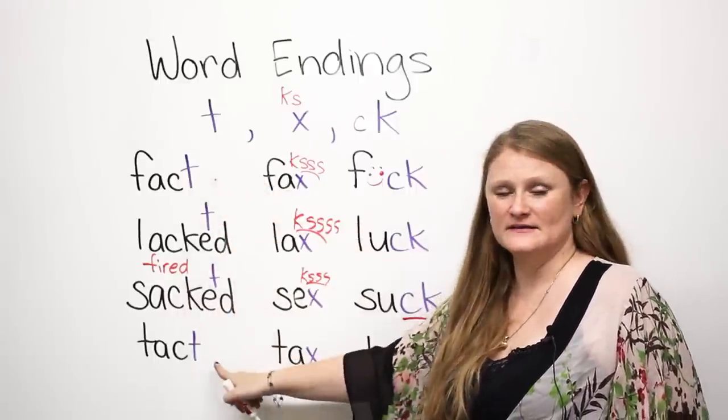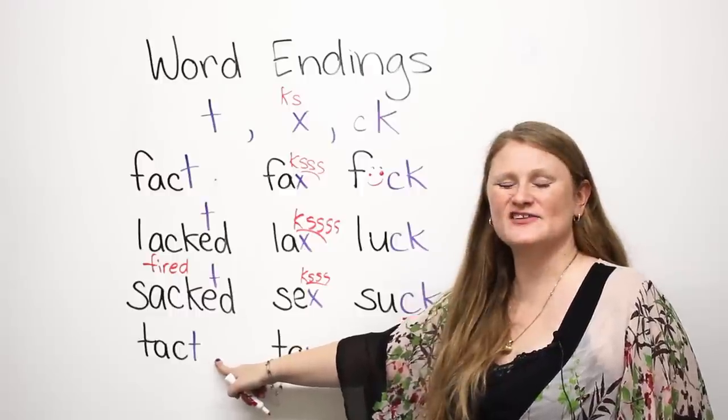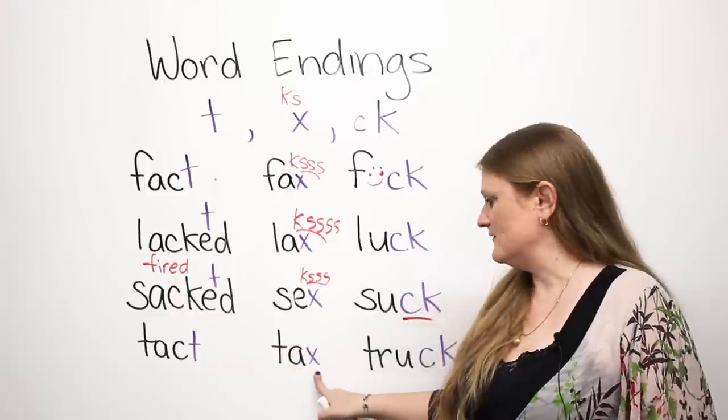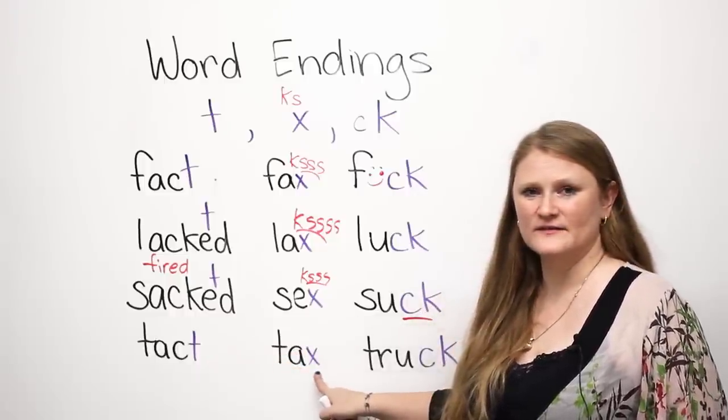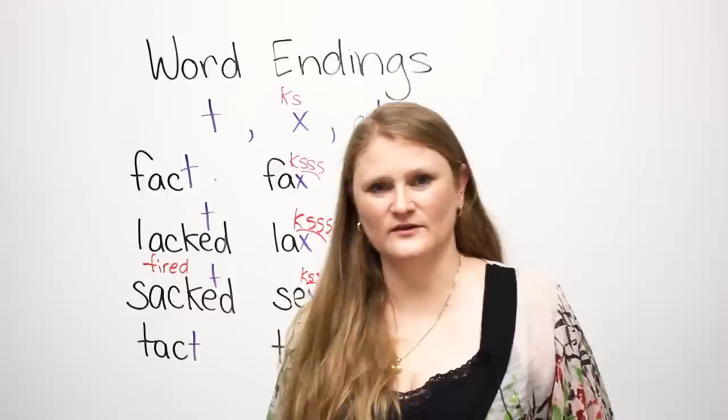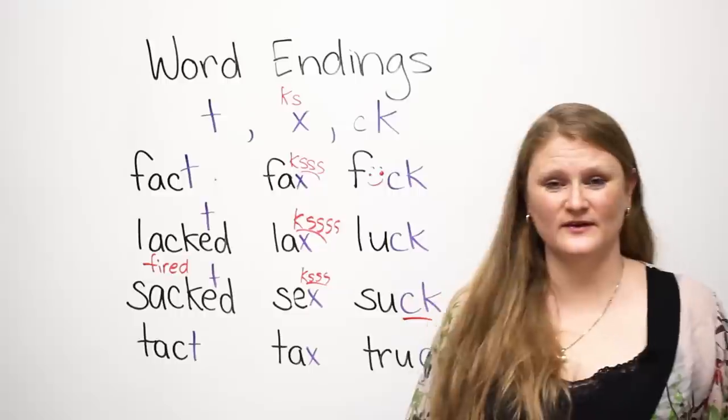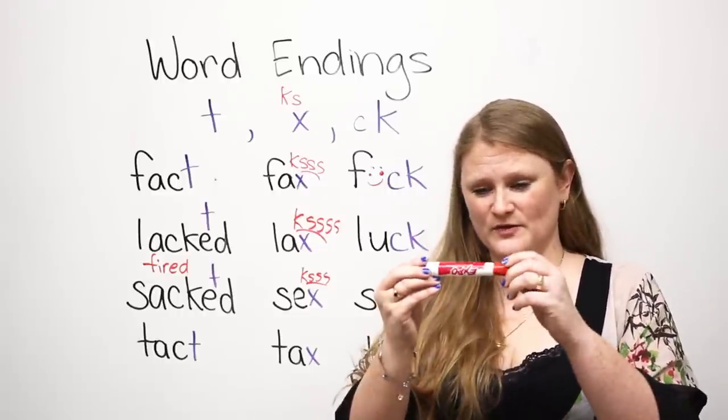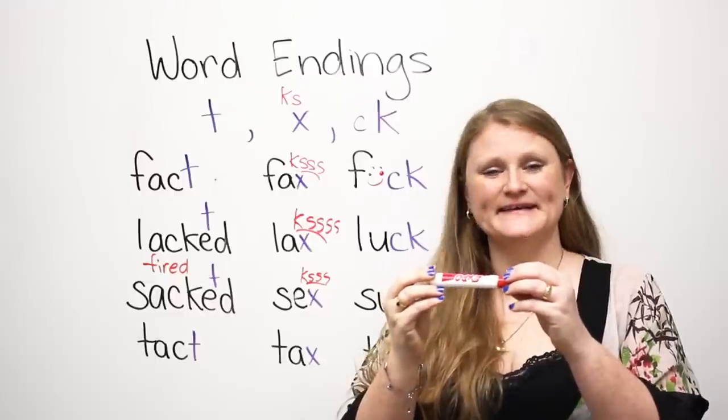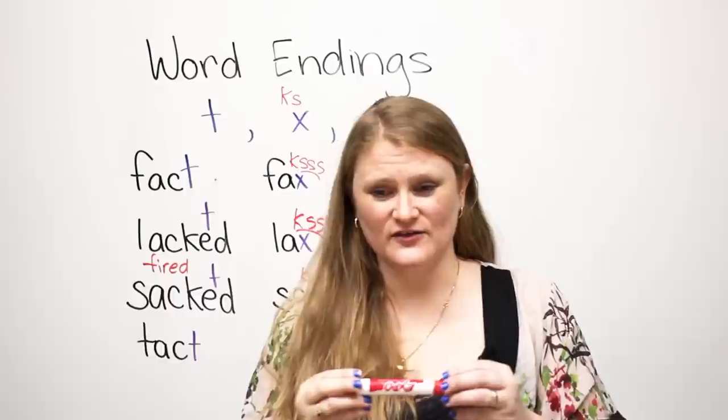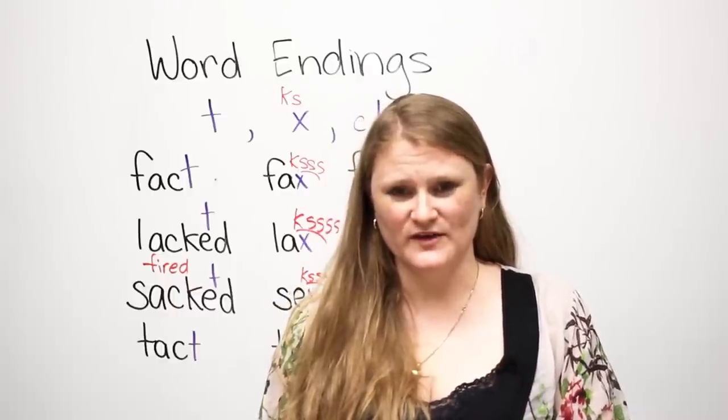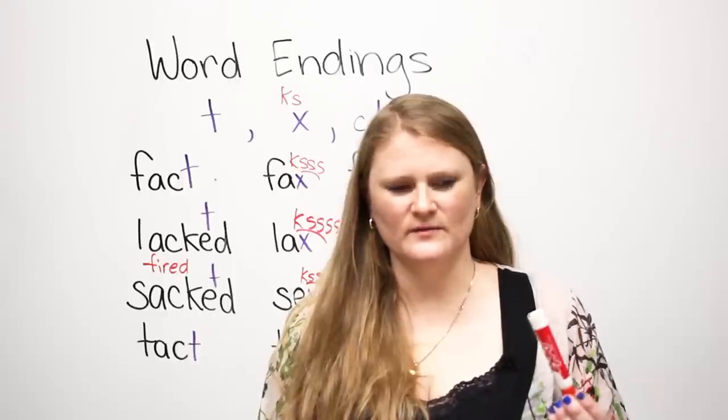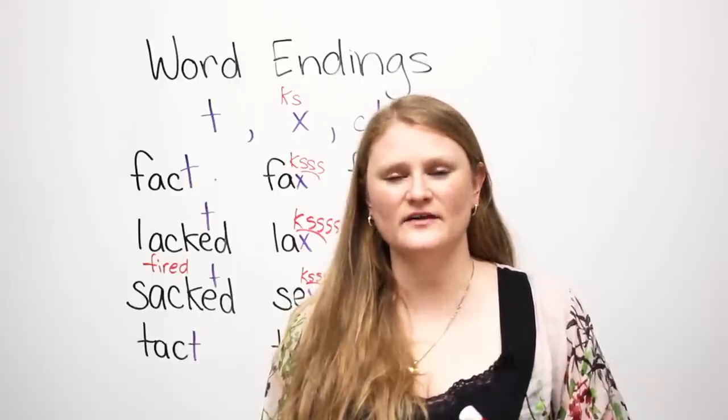The last three examples. We have the T at the beginning. This word is tact. Tact means ability to do something. Then we have the word tax. If anyone's ever traveled to Canada, you know about our tax. It's very high. When you go to the store to buy something, you look at the price and go, 'This beautiful marker is $1. I can buy that.' So then you go to the cash register and they're like, 'That's $1.14, please.' What?